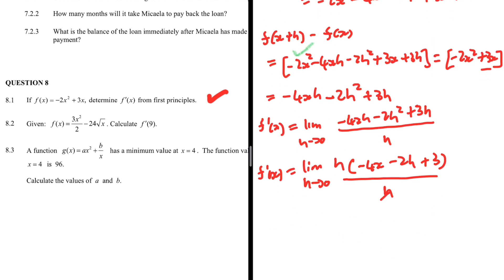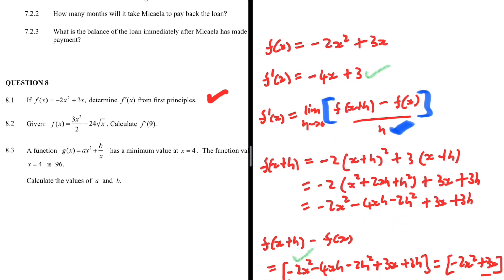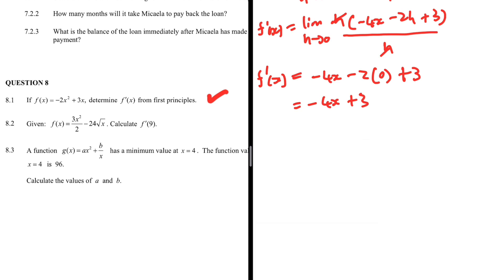With h cancelled, we now let h tend to zero: f prime of x = -4x - 2(0) + 3, which equals -4x + 3. This is the same result we got using the power rule, so we are confident we have done the correct thing. That is question 8.1.